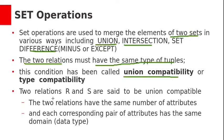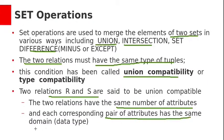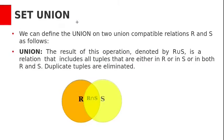Two relations R and S are said to be union compatible if they have the same number of attributes and each corresponding pair of attributes has the same domain, meaning the same data type. Let us see set union.